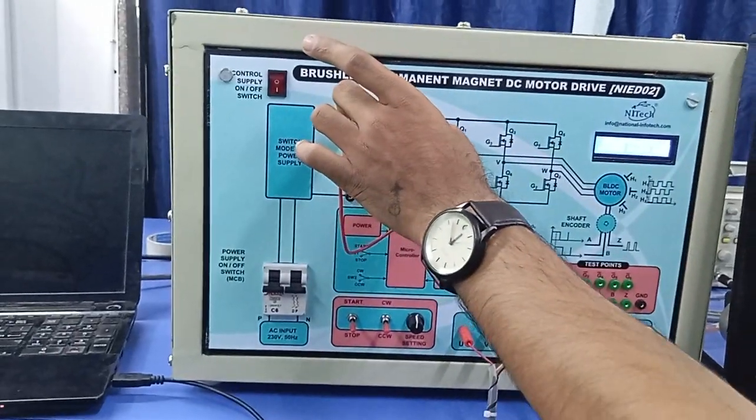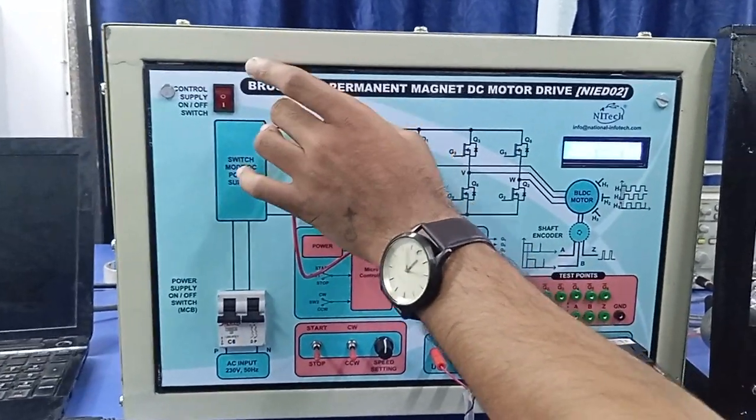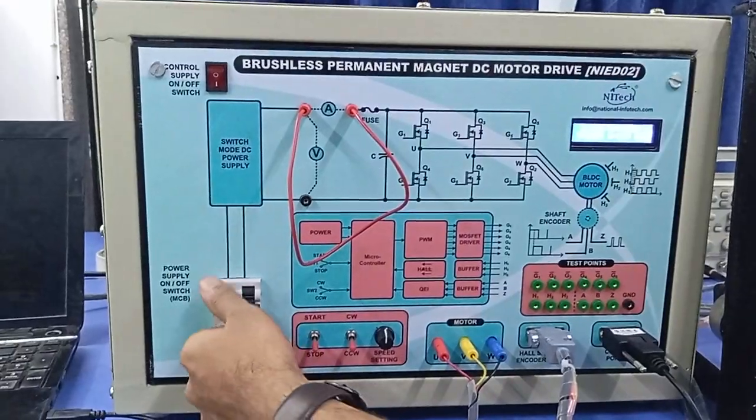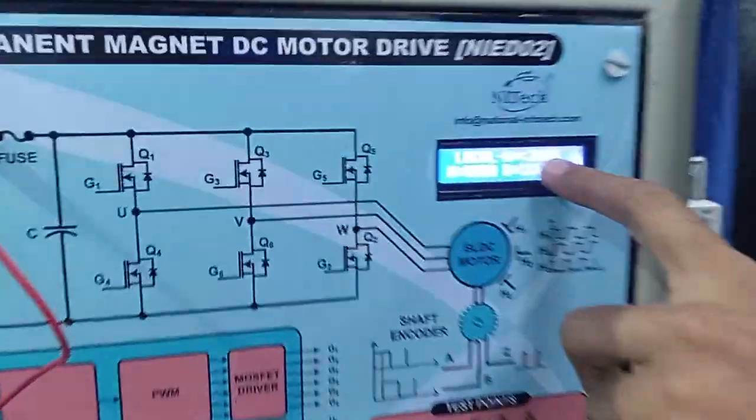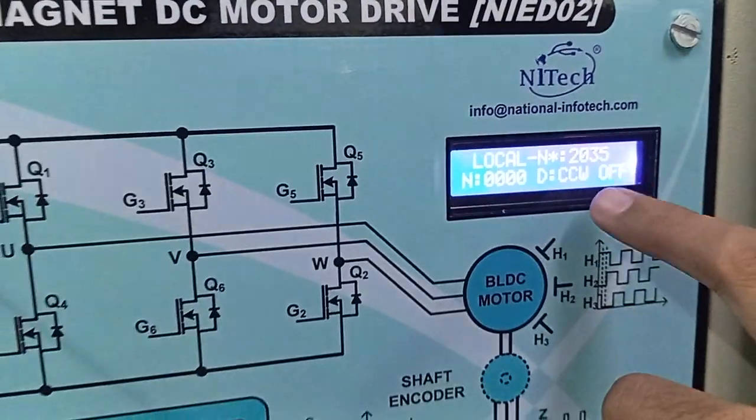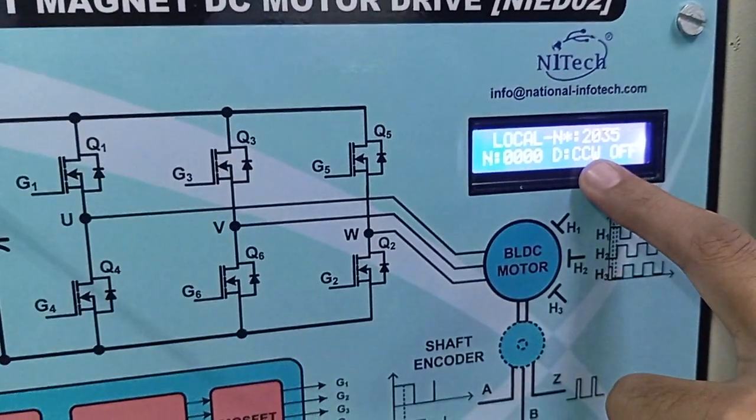After that, you can start the MCV. Here you can see the set speed is currently 2035 and the direction set is counterclockwise. If you want to make it clockwise, you can select here from the clockwise option.